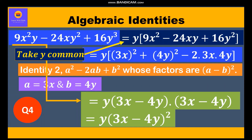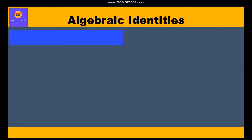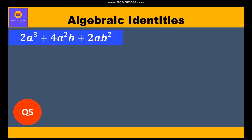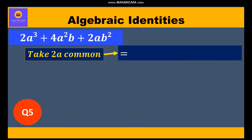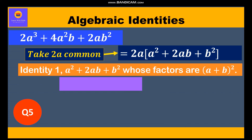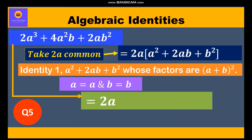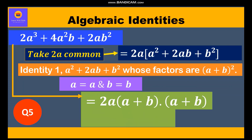Question 5: Factorize 2a³ + 4a²b + 2ab². Here 2a is common in all terms, so we take 2a outside: 2a(a² + 2ab + b²). This is identity one where a = a and b = b. Therefore the factors are 2a·(a + b)(a + b) = 2a·(a + b)².